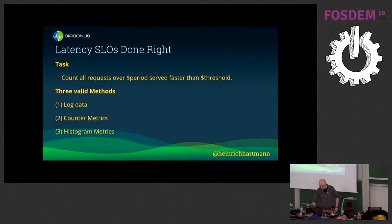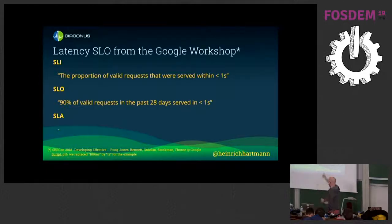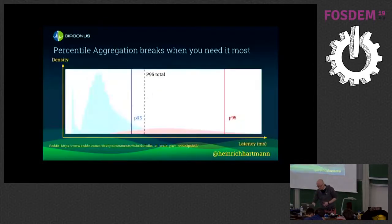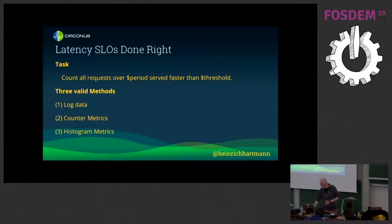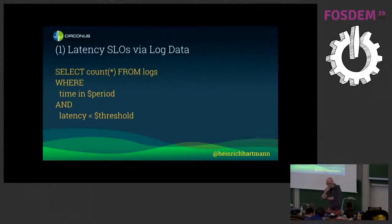I hope I've convinced you that percentiles are not really it. To be completely fair, the Google folks didn't actually use a percentile metric as the SLI — they used the proportion of valid requests served within one second. That is precisely the first method I'll cover. So here are three ways to do it right: first, counting log data; second, counter metrics; and third, histogram metrics.